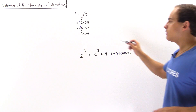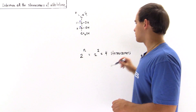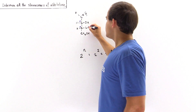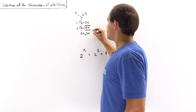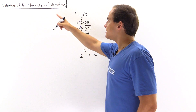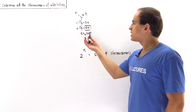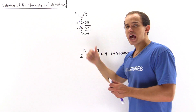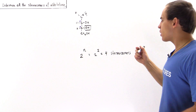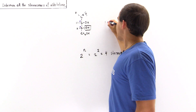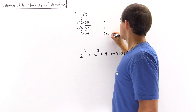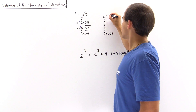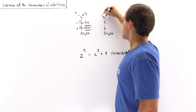Now that we know there are four stereoisomers and we already have one of them, let's determine the other three. This first isomer is part of a category known as the D-aldotetroses, because the last stereogenic carbon has the OH group pointing to the right side. The second D-aldotetrose stereoisomer also belongs to the D category.